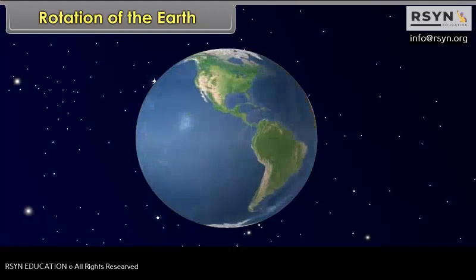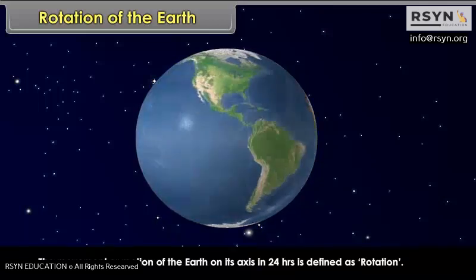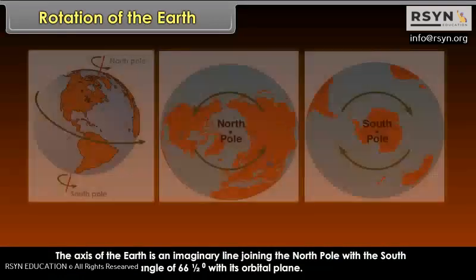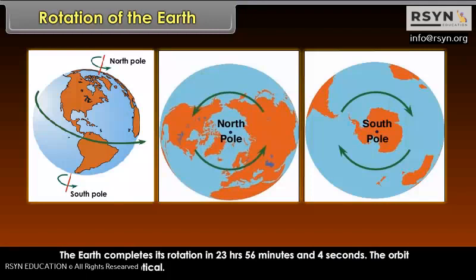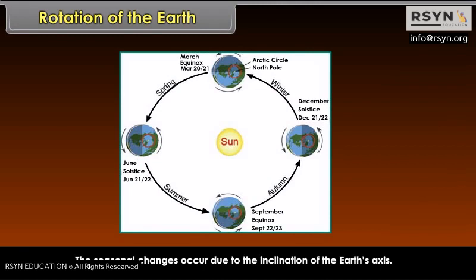Rotation of the Earth. The movement or motion of the earth on its axis in 24 hours is defined as rotation. The axis of the earth is an imaginary line joining the north pole with the south pole. It makes an angle of 66 and a half degrees with its orbital plane. The earth completes its rotation in 23 hours, 56 minutes and 4 seconds. The orbit of the earth is elliptical.